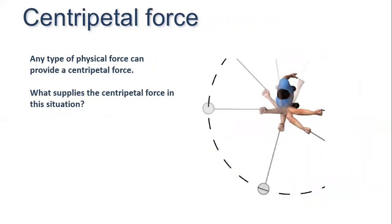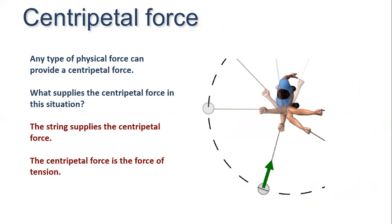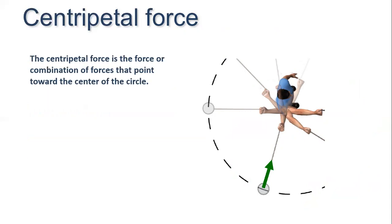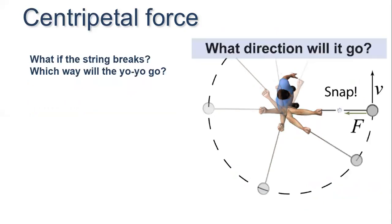It takes a force to cause an object to move in a circle; this force is called centripetal force. Many types of physical force can provide a centripetal force. The spring supplies the centripetal force — the centripetal force is the tension force, or combination of forces, that point toward the center of the circle.